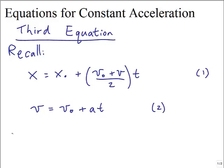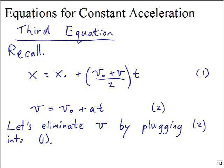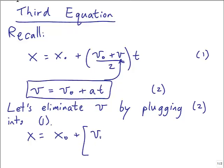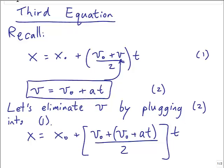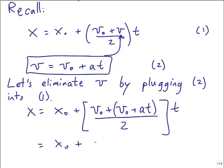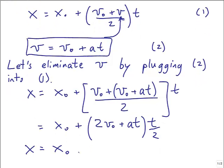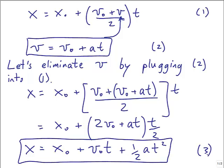Let's derive the third equation for constant acceleration by combining equations 1 and 2. We eliminate v by substituting equation 2 into equation 1. Plugging (v-sub-0 plus at) in for v: x equals x-sub-0 plus (v-sub-0 plus v-sub-0 plus at) over 2, times t. That gives x-sub-0 plus (2v-sub-0 plus at) times t over 2, which simplifies to x equals x-sub-0 plus v-sub-0 times t plus one-half at squared — the third equation of constant acceleration.